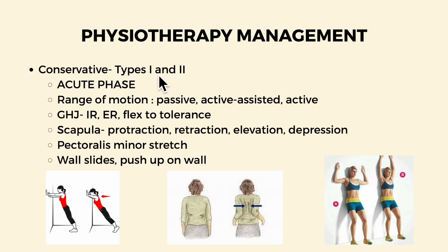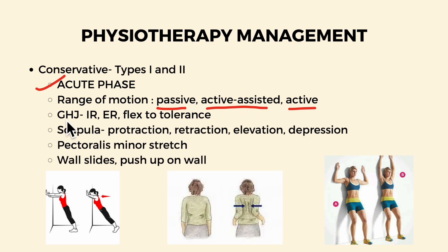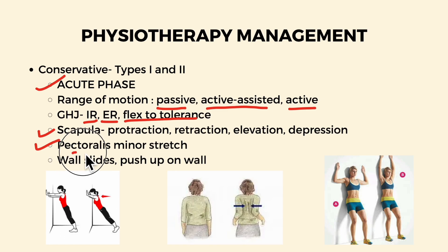For physiotherapy management of conservative treatment for grade one and grade two injuries, in the acute phase, range of motion exercises are provided — passive, progressing to active-assisted and then active range of movements of the shoulder. For the glenohumeral joint, this includes internal rotation, external rotation, and flexion to tolerance, within pain-free limits. Scapular protraction, retraction, elevation, and depression should be emphasized, as there can be a tendency toward a more flexed posture. Stretches such as pectoralis minor and pectoralis major stretches can be incorporated, along with wall slides and wall push-ups as tolerated.